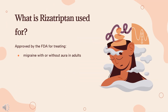What is rizatriptan used for? Rizatriptan is indicated for the acute treatment of diagnosed migraine with or without aura. It is not indicated for the prophylactic therapy of migraine nor the treatment of cluster headache. In Canada, rizatriptan is approved in adults. In the U.S., oral tablet formulations are used in patients 6 years of age and older, and the oral film formulation is approved for patients 12 years of age and older weighing 40 kg or more.